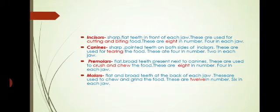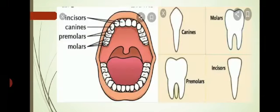First is incisors. Incisors are sharp, flat teeth in the front of each jaw. These are used for cutting and biting the food. There are 8 incisors found in each jaw. As you can see in the diagram over here, these pointed teeth are called incisors.